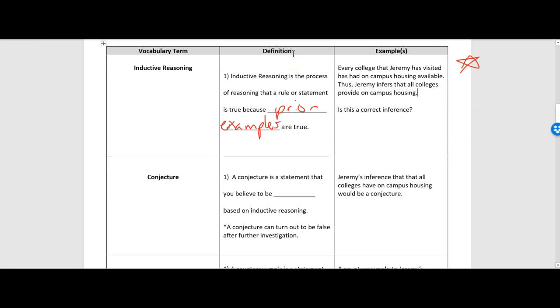Is this a correct inference? Well, you could think about that yourself, whether that makes sense. But regardless about whether it's a correct inference, this is an example of inductive reasoning. Jeremy took previous examples, prior examples, and used those to make a decision about what might be true in general.